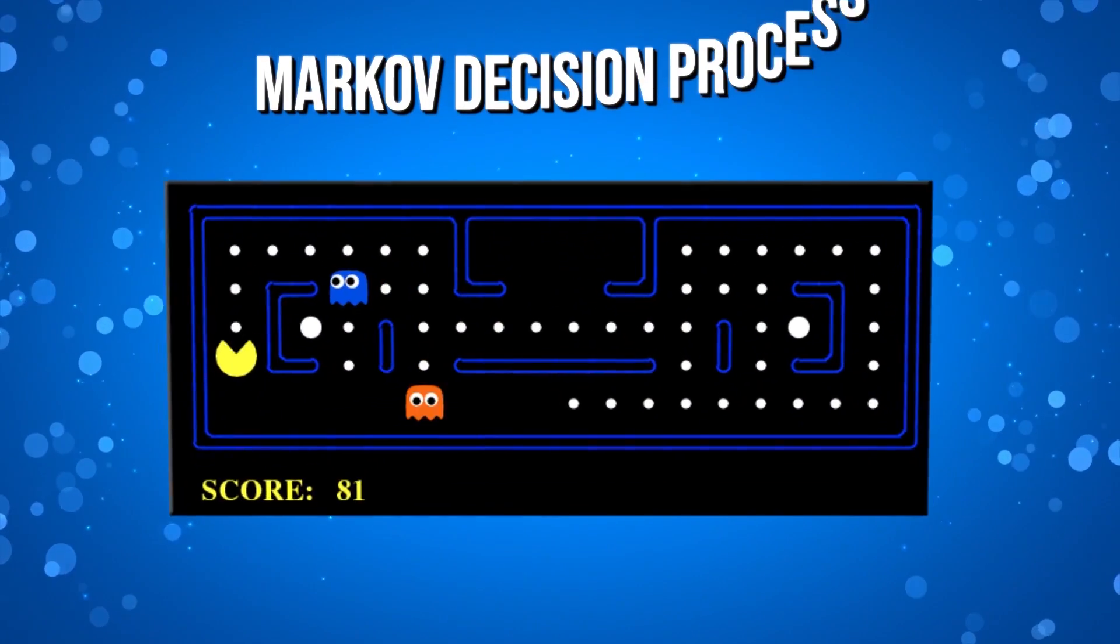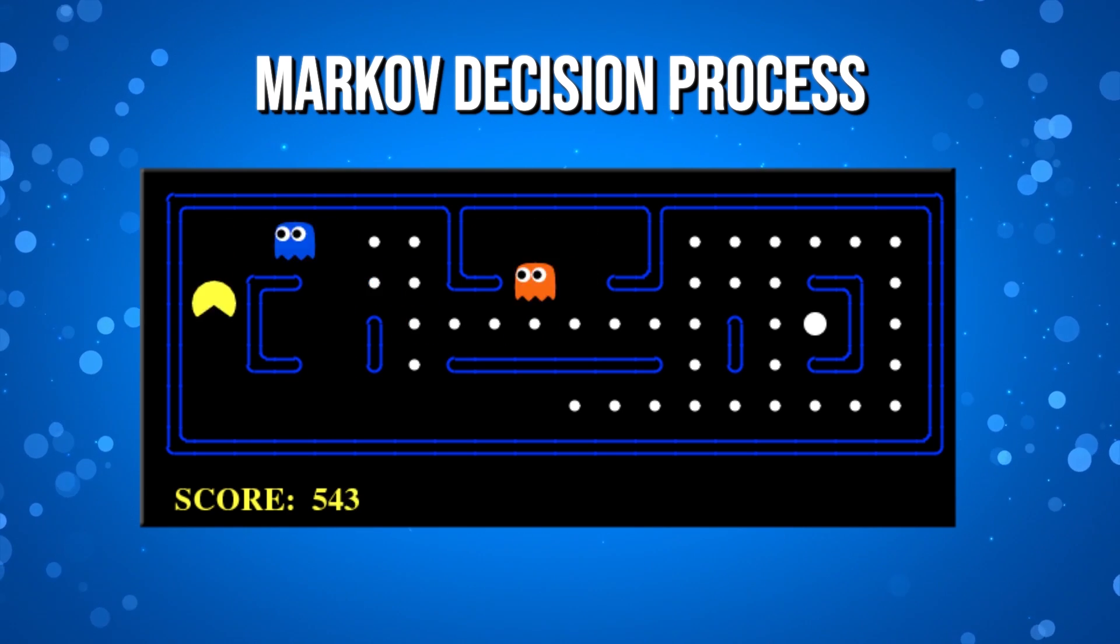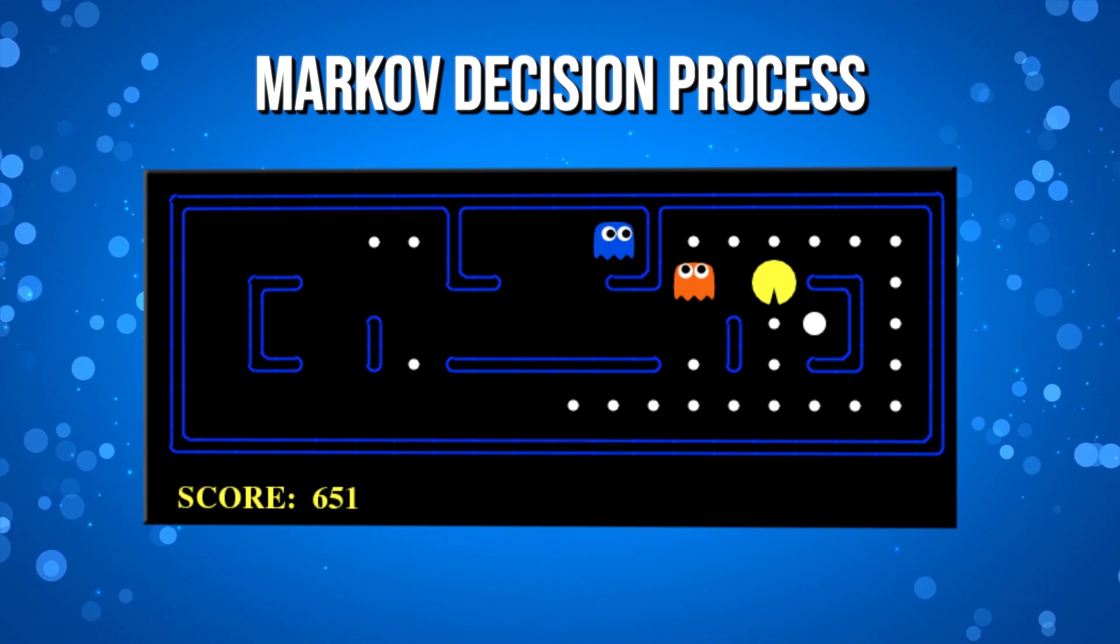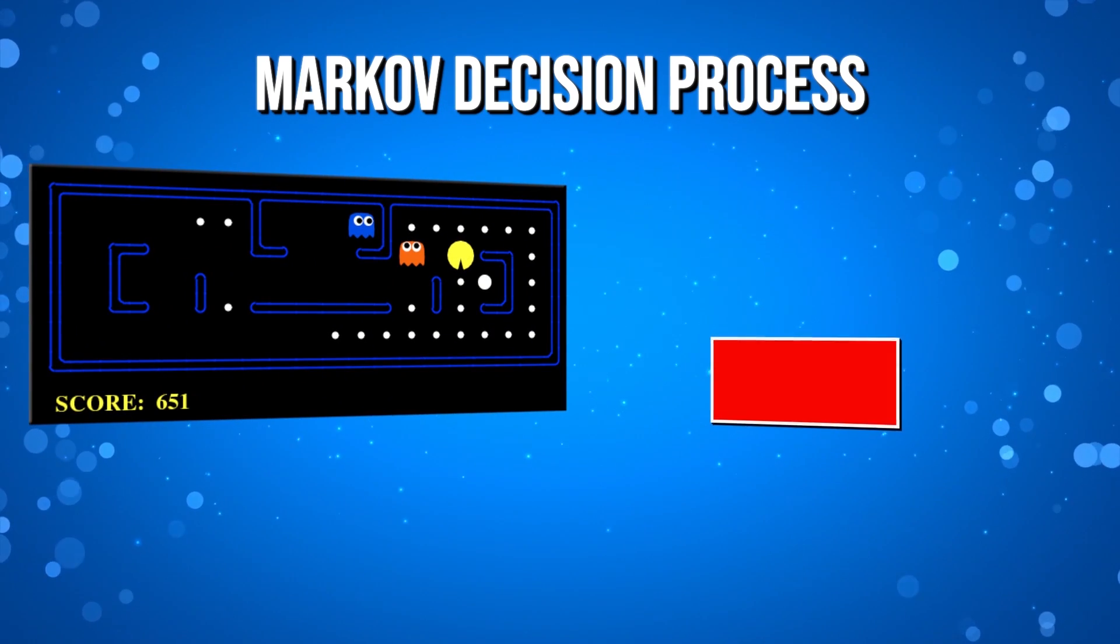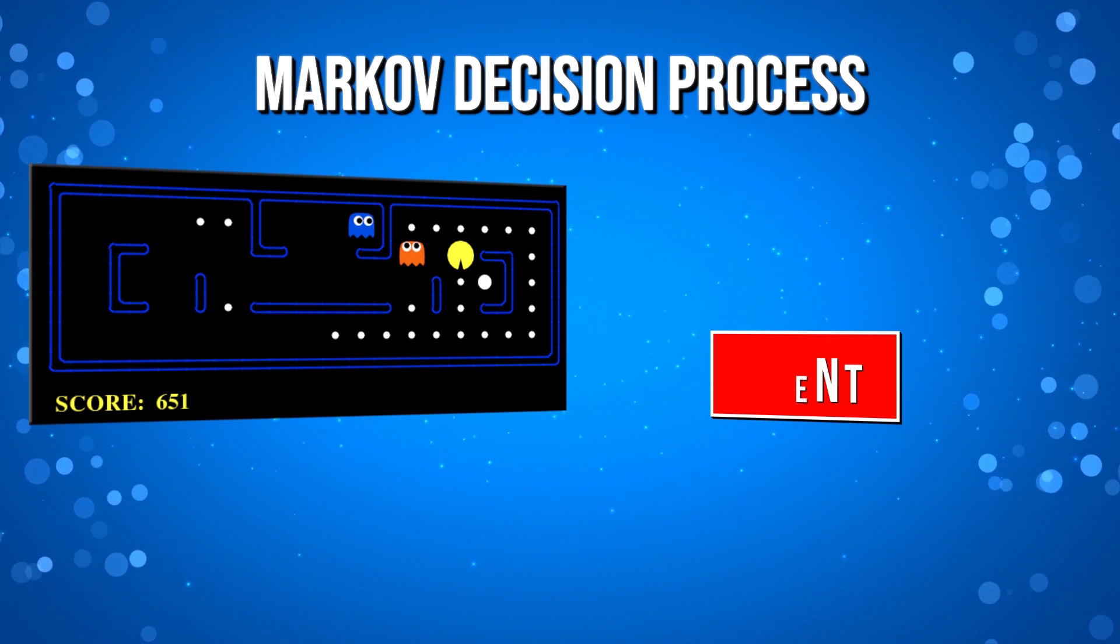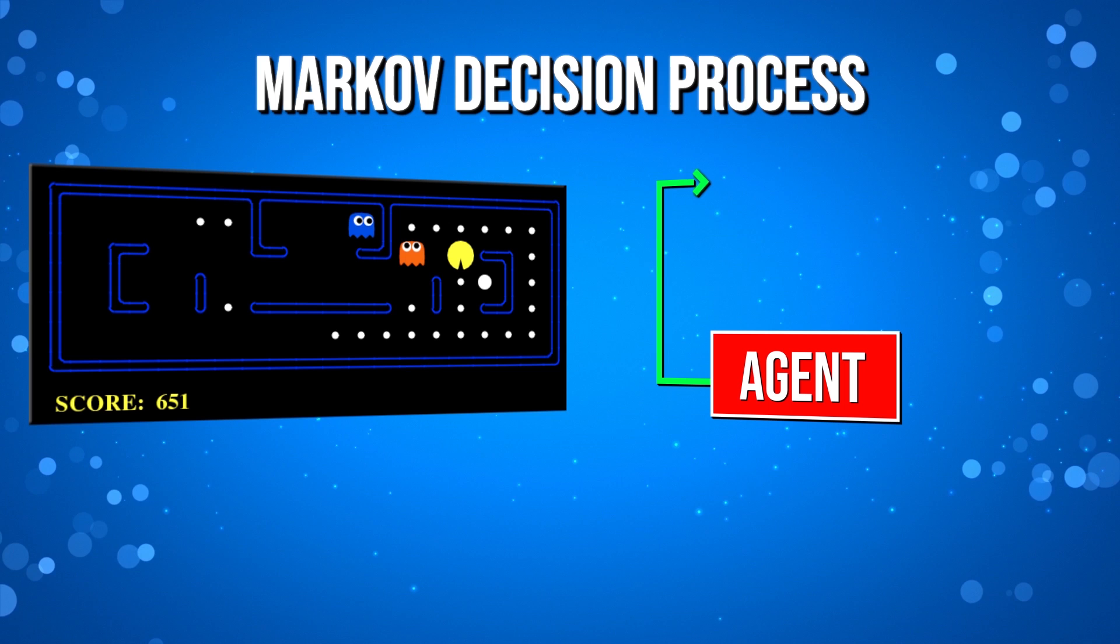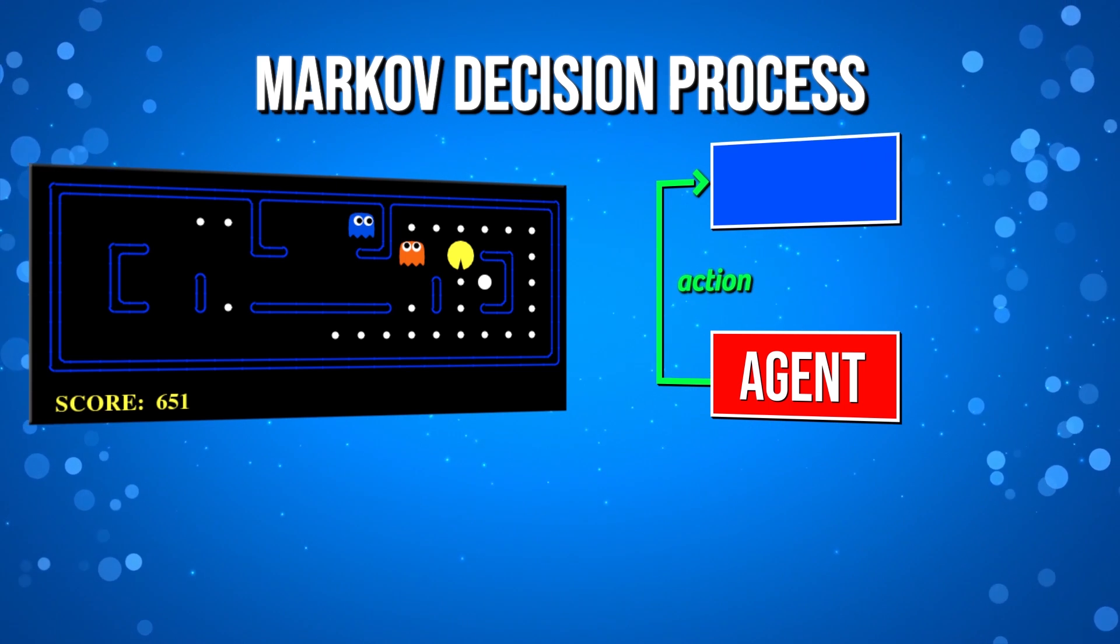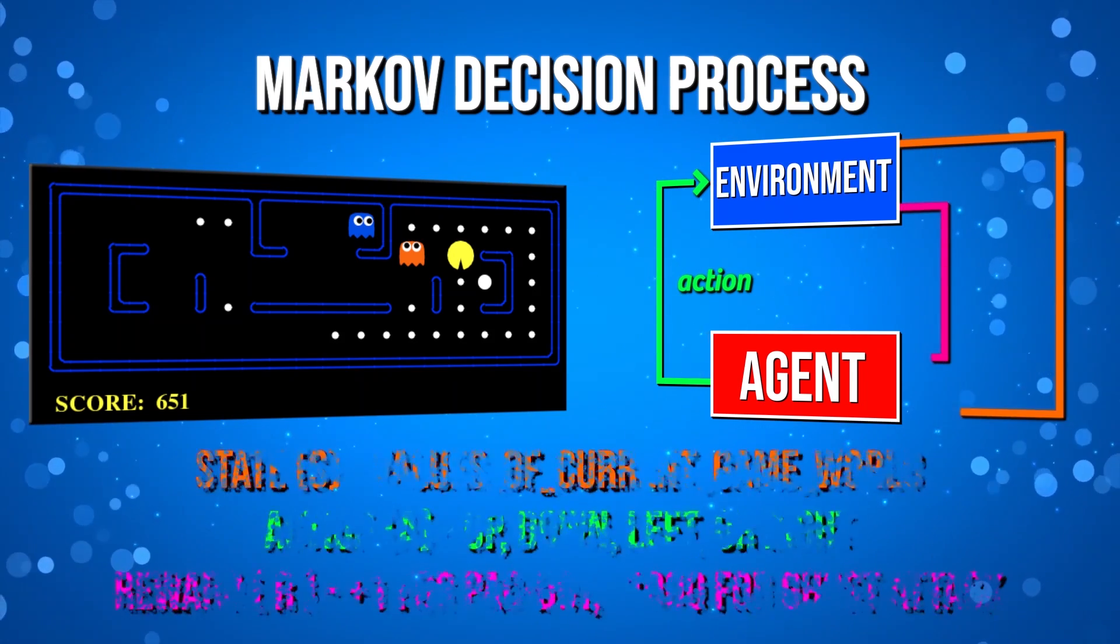In reinforcement learning, an agent tries to come up with the best action to take given a state. In the video game Pac-Man, the state would be the 2D game world we're in. That includes the surrounding items like enemies, walls, and Pac-Dots. The action would be moving through this 2D space, which would be going either up, down, left, or right. So given the state of our game world, our agent will need to pick the best action to take in order to maximize rewards.